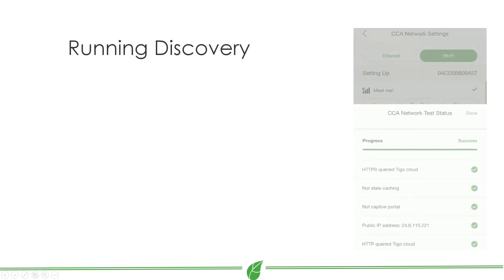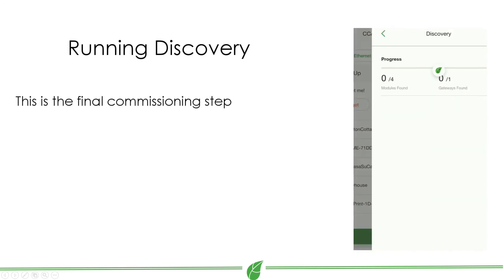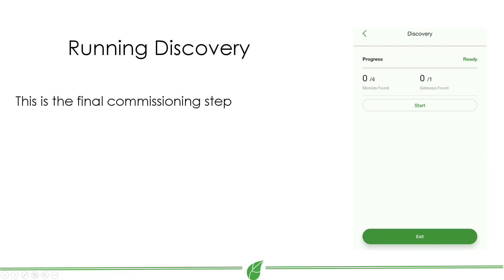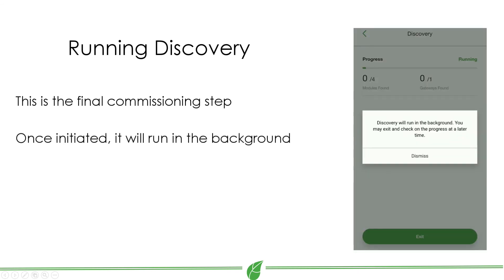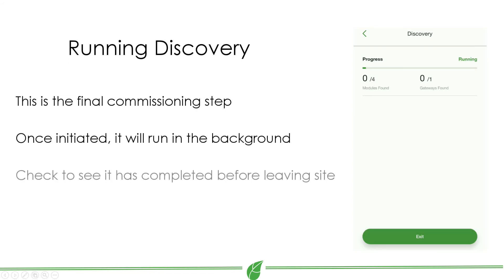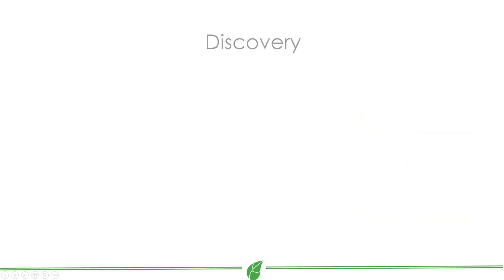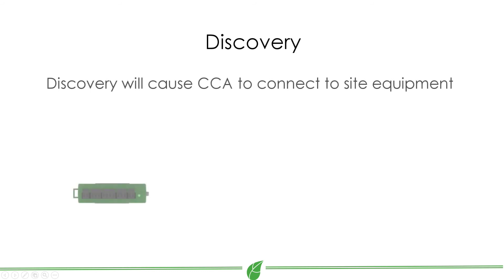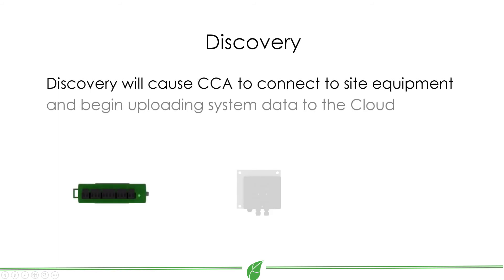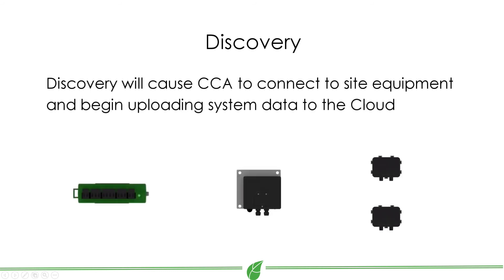The last step of the commissioning process is called discovery. Initiate discovery and it will run in the background. Feel free to leave the app or disconnect your phone from the CCA and reconnect later before leaving the installation site to check its progress. During discovery, your CCA is connecting to site equipment and verifying that all installed modules are communicating with it successfully.